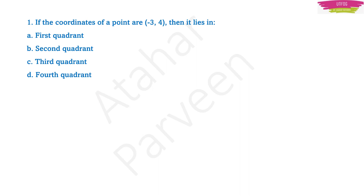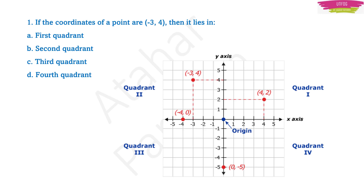The question is: if the coordinates of a point are (-3, 4), then it lies in which quadrant? Four options are given: first, second, third, and fourth quadrant. Imagine an x and y axis graph and you can see where (-3, 4) lies. It lies in the second quadrant, so option B will be the correct answer.